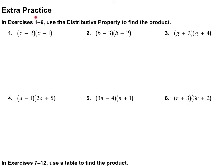On this page, we're told to use the distributive method for the first six problems. I'm going to start with my first term: x multiplied by x is x squared. x multiplied by negative 1 is negative 1x. Now I'll take my second term, negative 2: negative 2 multiplied by x is negative 2x. Then negative 2 times negative 1 is positive 2. At the end I need to combine like terms — I notice those two can be combined — so my final answer is x squared minus 3x plus 2.